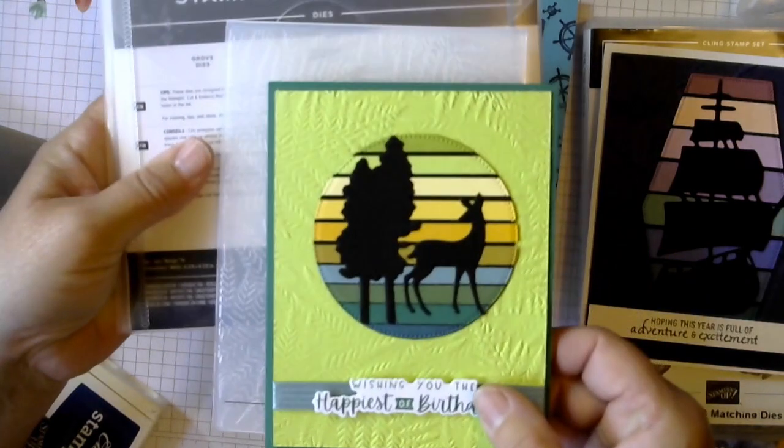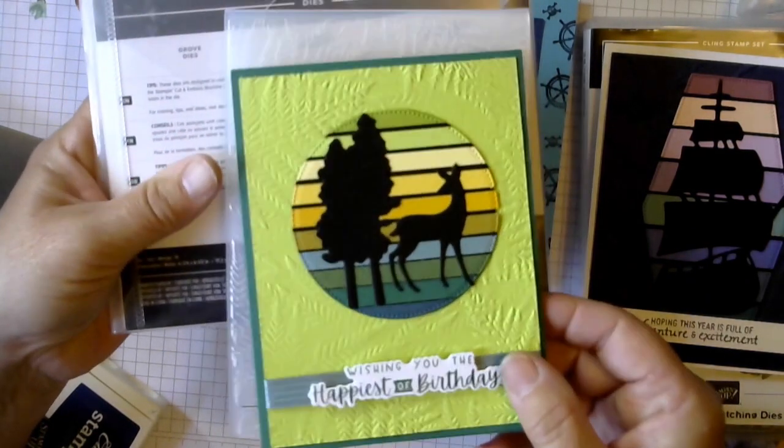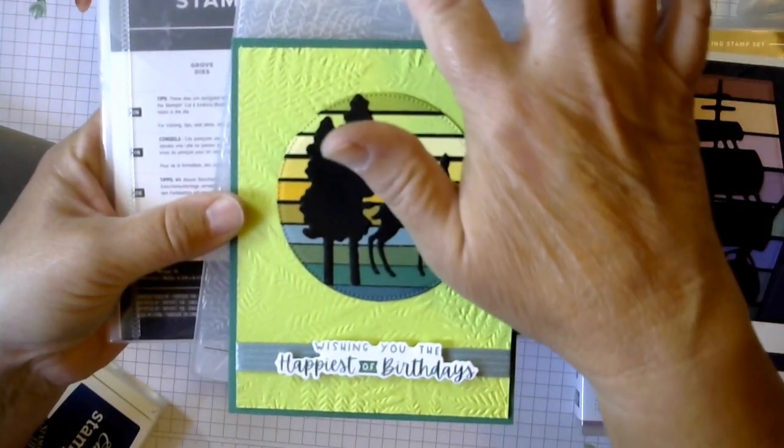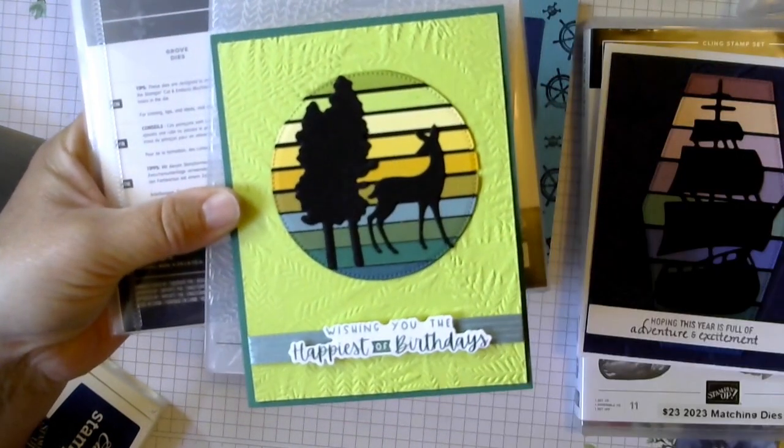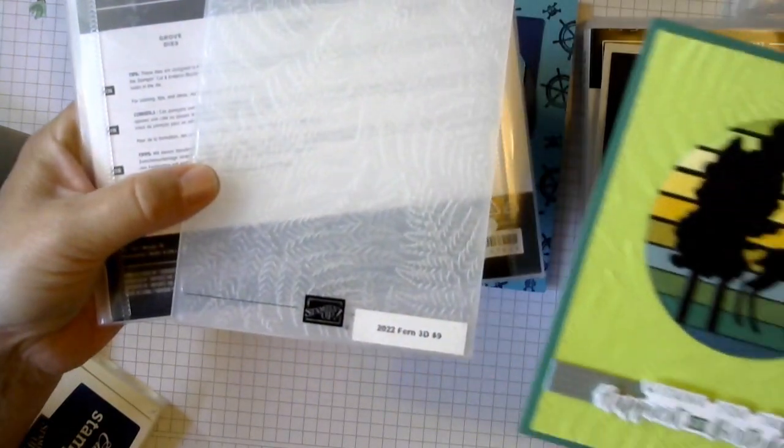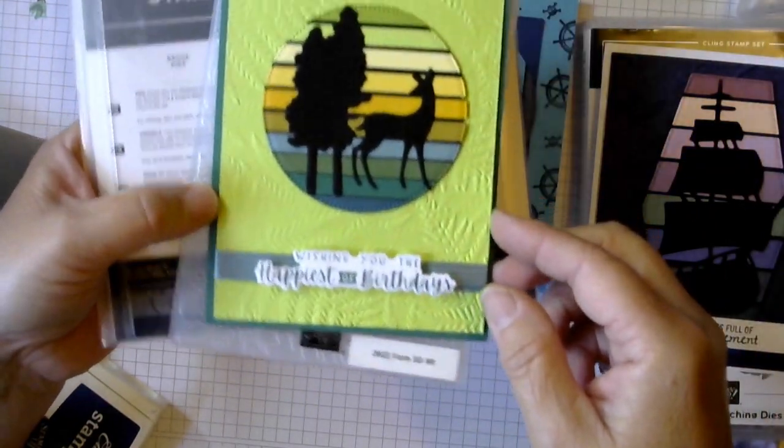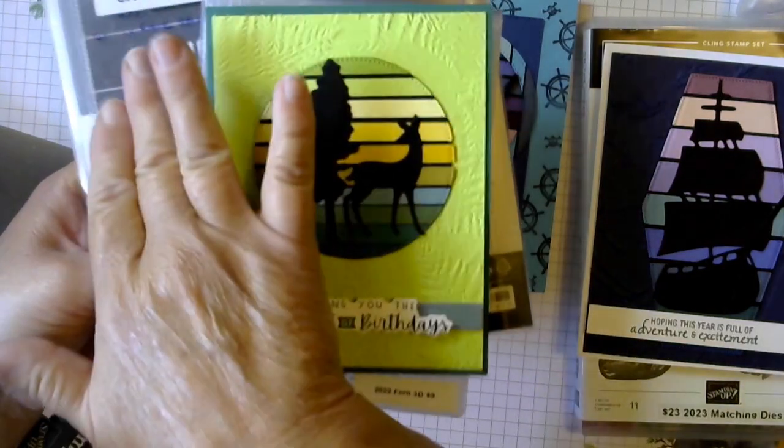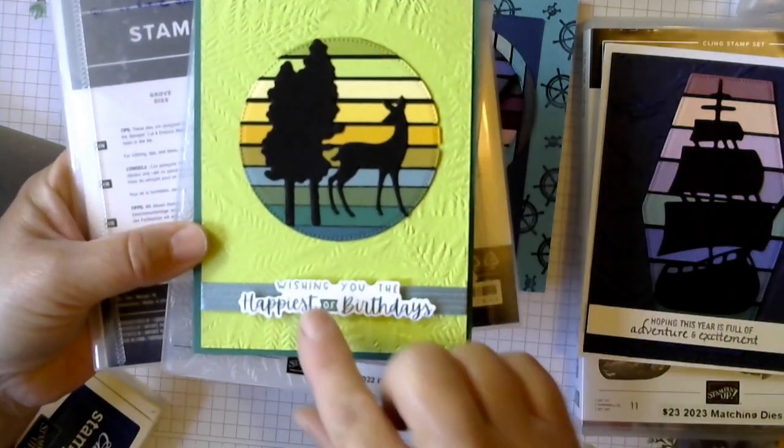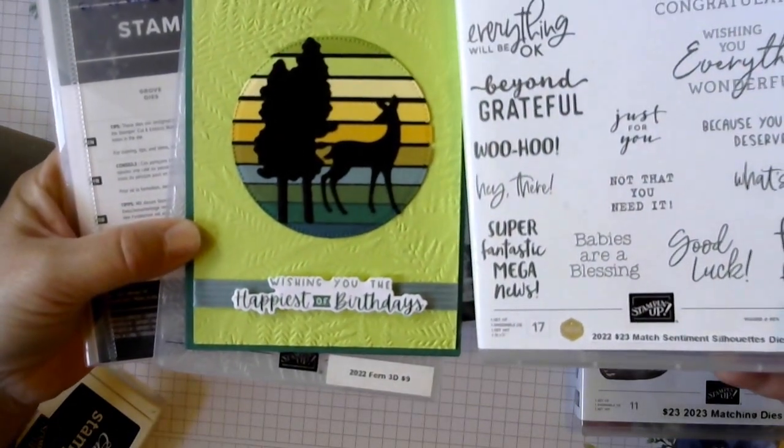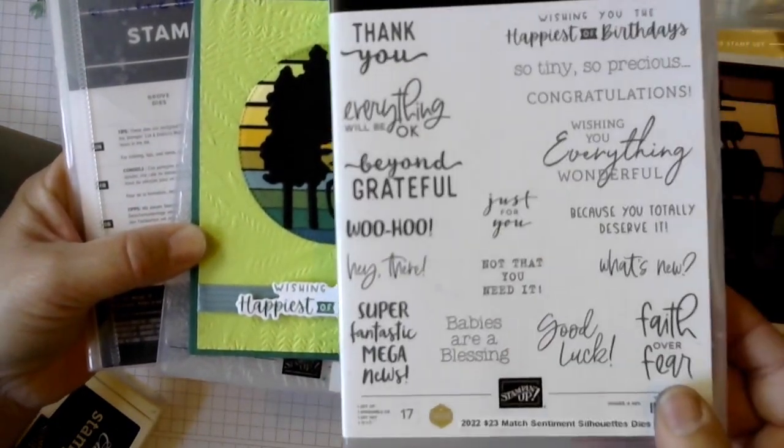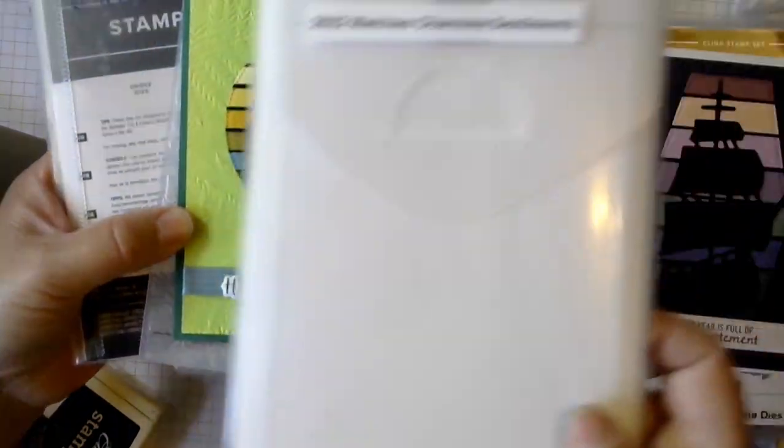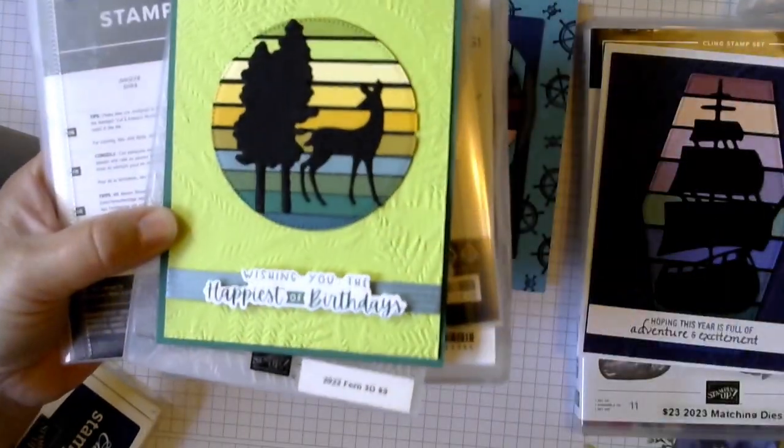Then I did one using the grassy grove dies. I'll get the name right. And the fern embossing folder. So the trees and the deer are from this die set. And then the stamp that I used was from the Charming Sentiments. And it has the silhouette dies that cut them out. Sentiment silhouettes.